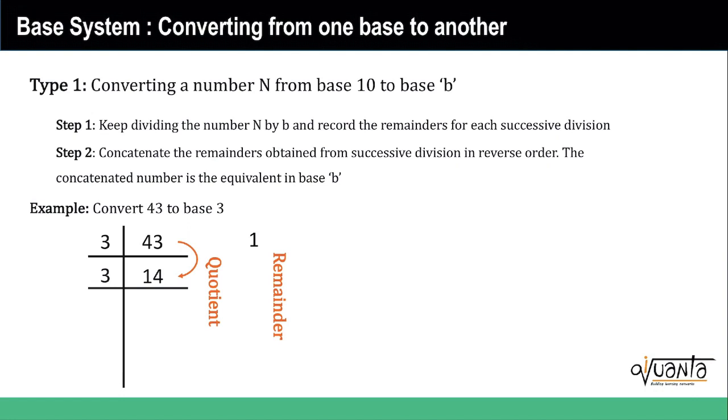Then we further divide because I am saying successive division. We further divide 14 by 3 and we get quotient 4 and remainder 2. We divide again, we get quotient 1 and remainder 1. We divide the last time and we get quotient 0, we cannot divide anything further, and we get remainder 1.